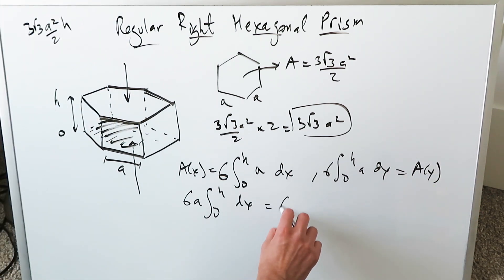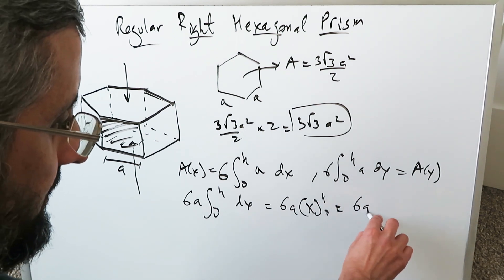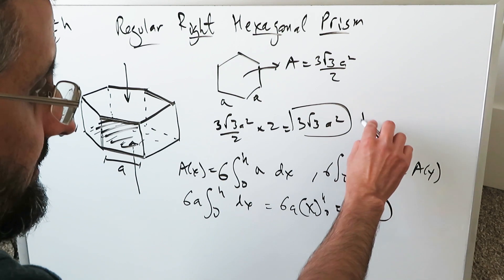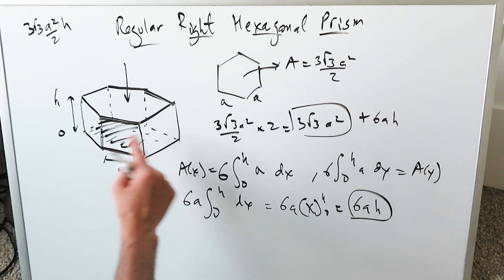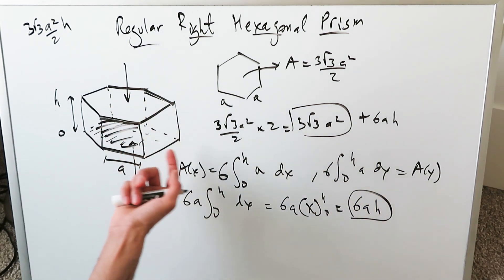The hidden integrand here, as you know, and the anti-derivative coming out of it is x from H and 0. Upper limit, lower limit, difference of the two, and you'll get 6AH. 6AH represents the surface area, the lateral surface area of this prism. 3 root 3 A square represents the sum of the upper and the lower face areas.